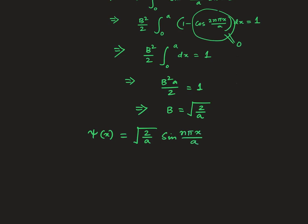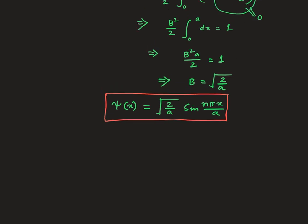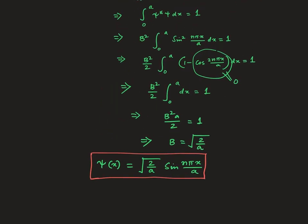So this is your wave function in one-dimensional box. This one is the normalized wave function. Now we are also left with another job, which is the energy of the particle. What could be the energy of the particle? So that we may do in the next video. So that's it for now. If you have any question, you can comment in the comment section.